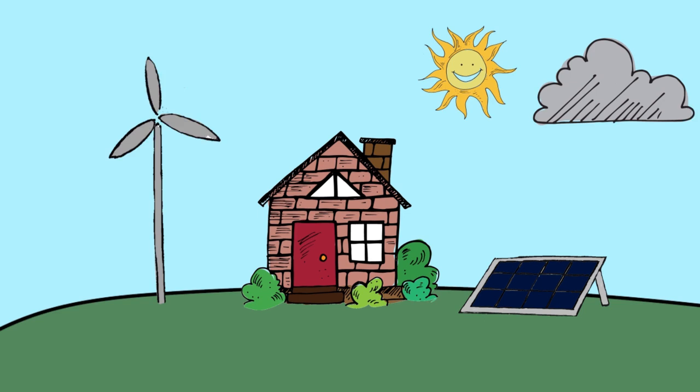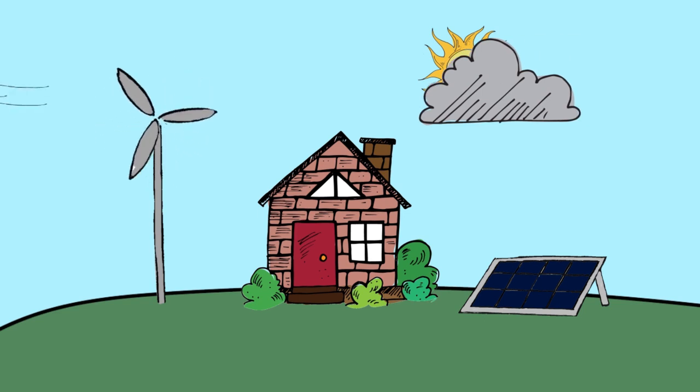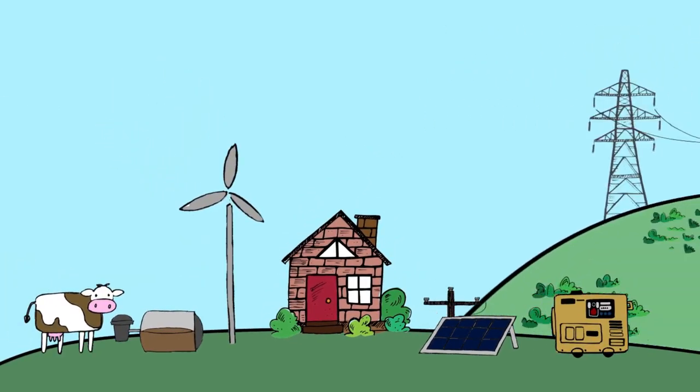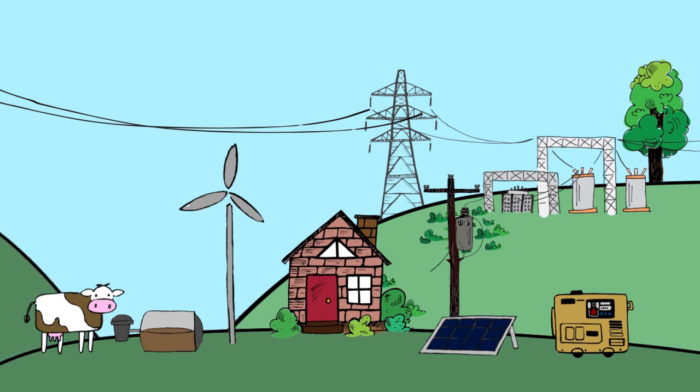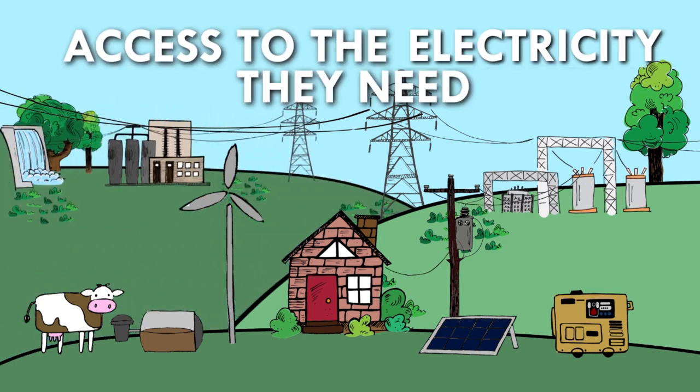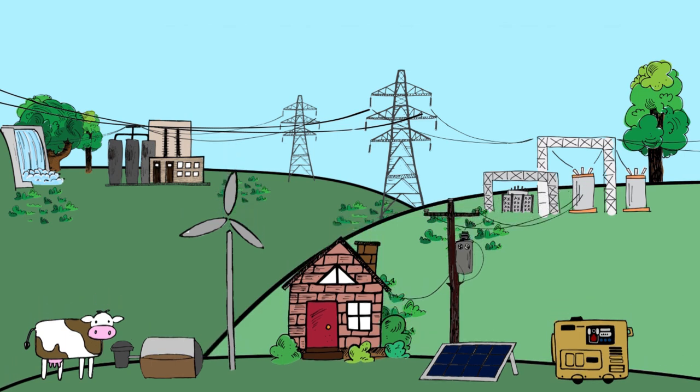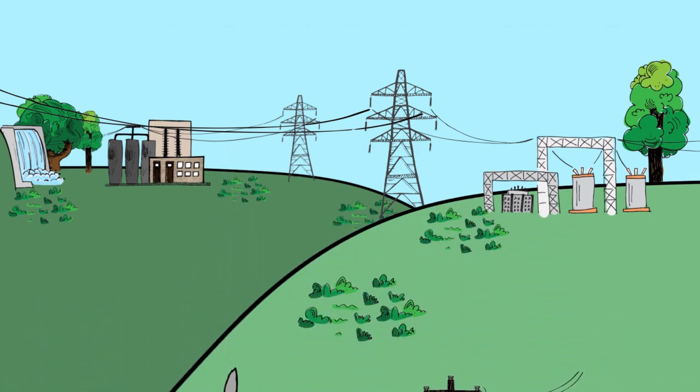Some days the sun doesn't shine. Some days the wind doesn't blow. By remaining connected to the electric grid and the steady supply of reliable power, consumers have access to the electricity they need whenever they need it. This is why staying connected to the electric grid is vital.